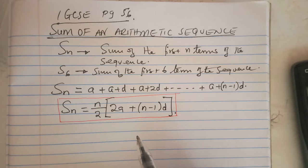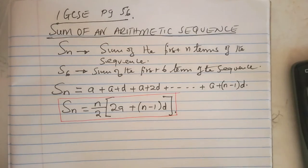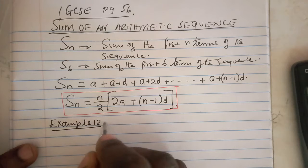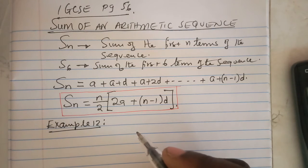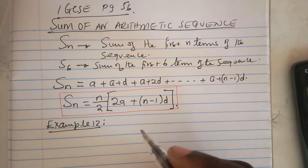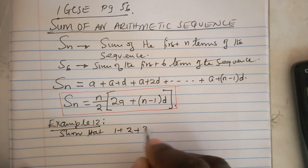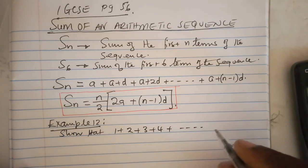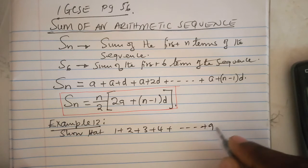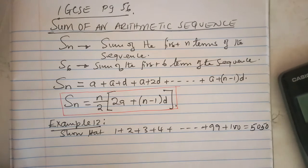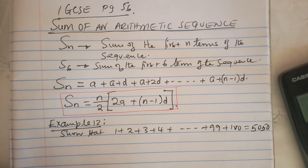Let us talk about example 12 on page 57. Show that 1 plus 2 plus 3 plus 4 plus all the way plus 99 plus 100 equals 5050 using the formula.